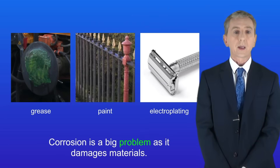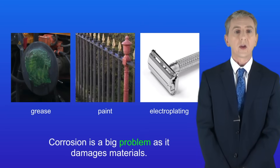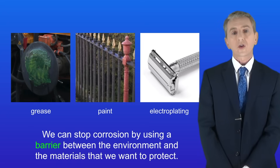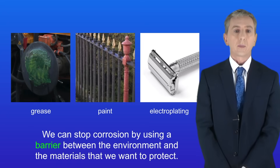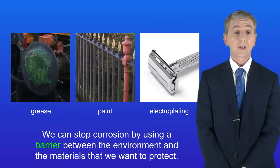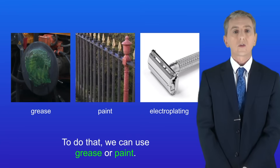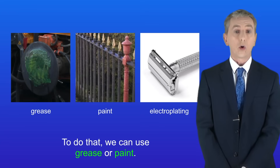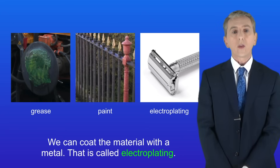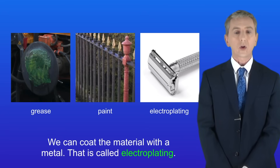Corrosion is a big problem as it damages materials, but we can stop corrosion by using a barrier between the environment and the materials we want to protect. To do that we can use grease or paint, or we can coat the material with a metal and that's called electroplating.